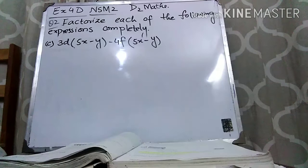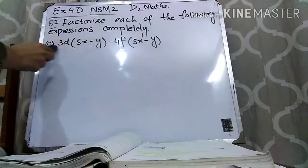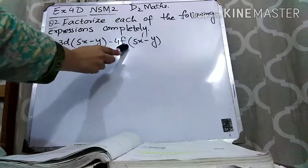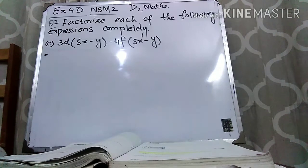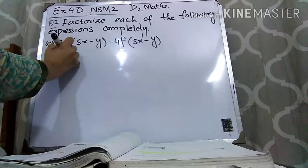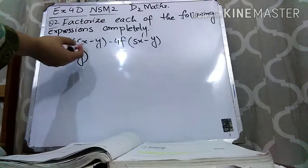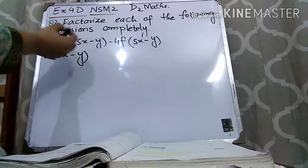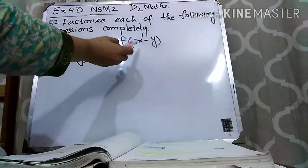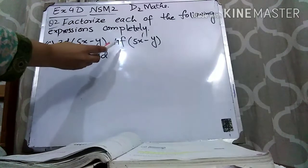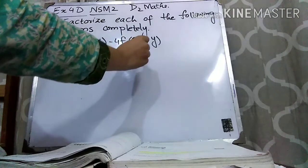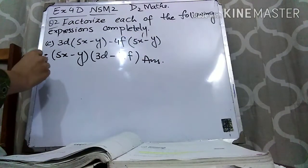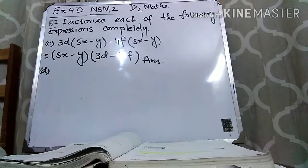Part C: (5x − y) is present in both terms, so take (5x − y) common. From the first term 3d is left, and from the second term 4f is left with a minus sign. So the answer is (5x − y)(3d − 4f).